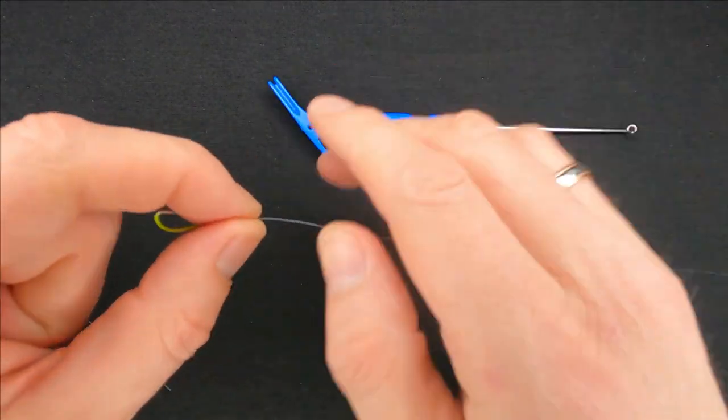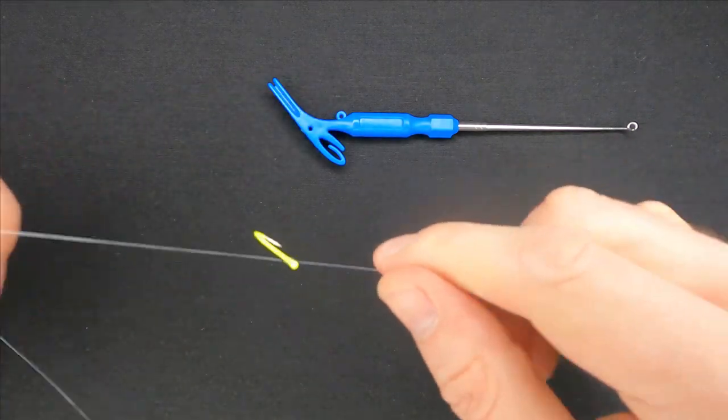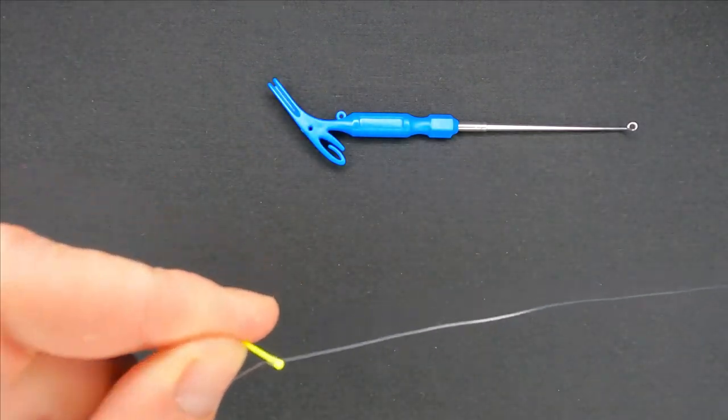Make the knot tight, cut unnecessary line and that is it with the hook.